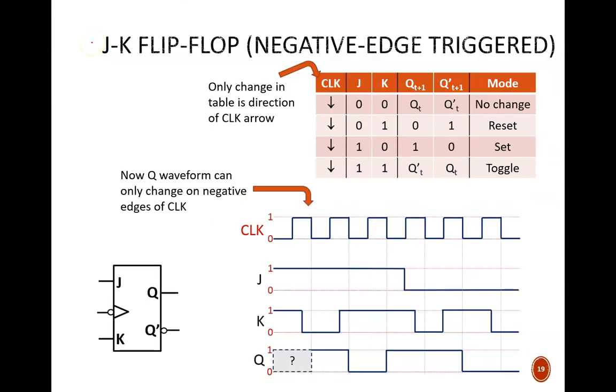That changes on this slide. The device symbol does now feature a bubble, so this is a negative edge triggered JK flip-flop. The only change in the characteristic table is that the arrows point down in this column. All the other columns remain exactly the same.